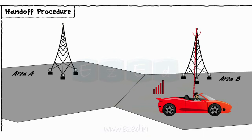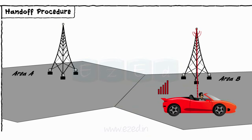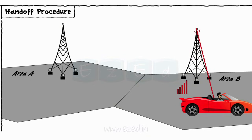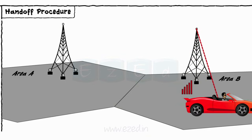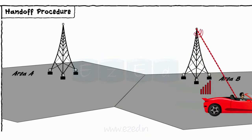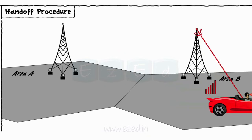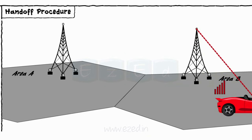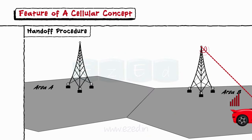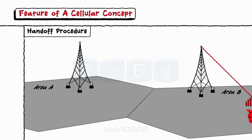In short, the device receives the signal network from base station B. But during this procedure, the call is still on. Hence, base station A handovers this call to base station B without any effect on the call. This procedure is known as the hand-off procedure. This process happens so rapidly that the user never notices it.